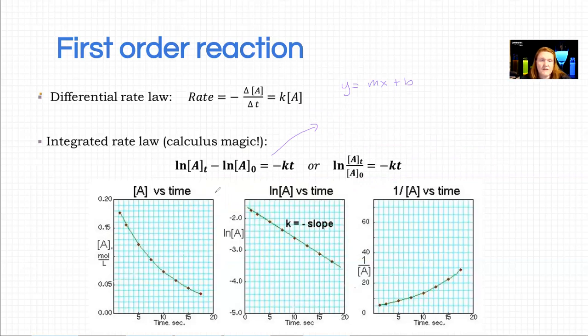So the way to do that is you just add ln of whatever you started with to both sides. So you get it into the format: ln at whatever time equals negative kt plus, I added because it's a subtraction over here, plus your beginning concentration.